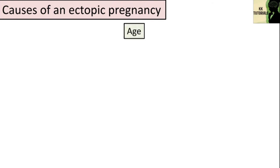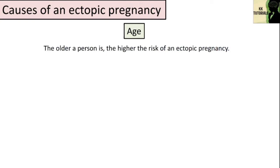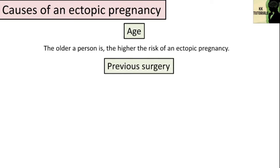Another risk factor is age. The older a person is, the higher the risk of ectopic pregnancy. Although some investigations suggest patients may be at higher risk with advancing age, it is believed that age may act as a surrogate for other risk factors.